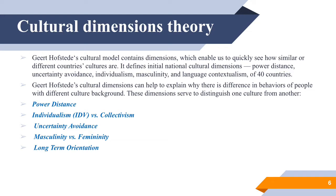National cultural mapping is based on the analysis of Hofstede — an influential Dutch researcher in the field of organizational culture — and his national cultural dimensions, which include power distance, uncertainty avoidance, individualism, masculinity, and language contextualism, studied across 40 countries.